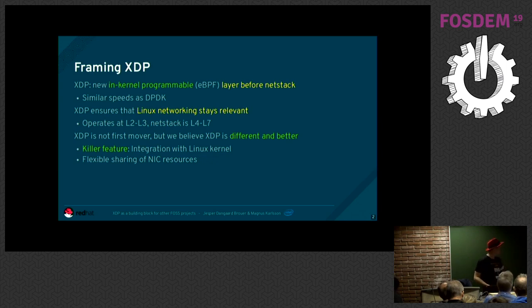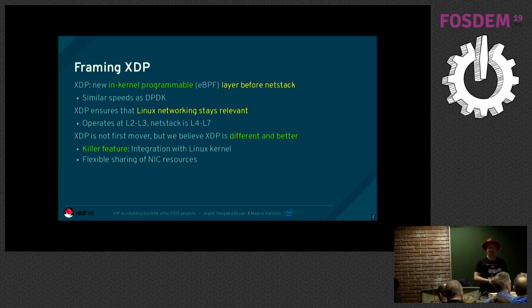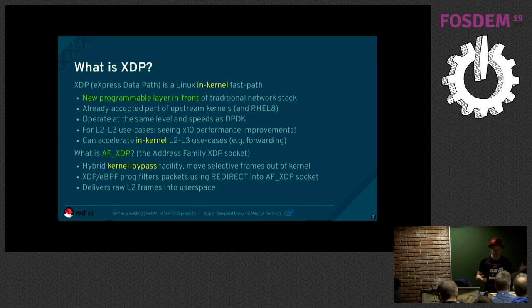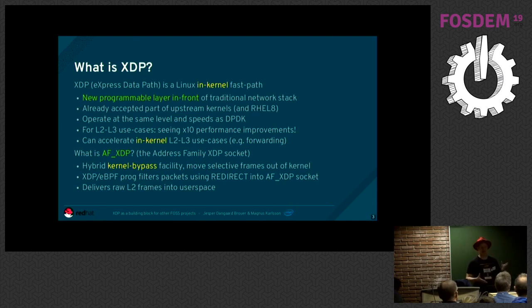I want to admit we're not the first mover — there are other solutions. But we believe XDP is different and better, because our killer feature is that we are integrated with the Linux kernel, and we also have flexible sharing of the NIC resources. XDP is an in-kernel fast path, a programmable layer in front of the traditional network stack. It's already part of the upstream kernels, and also RHEL 8. It operates at the same speed and level as DPDK, and we are seeing 10x performance improvements.